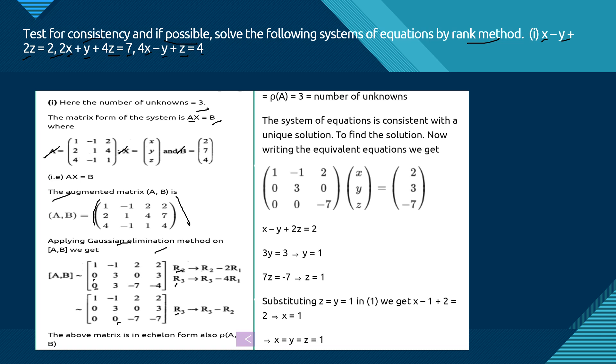Therefore, ρ(A) = ρ[A|B] = 3, and the number of unknowns is also 3. This indicates a unique solution, and the system is consistent.